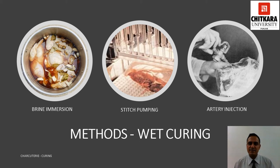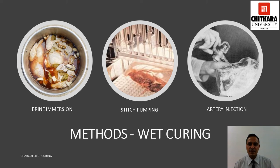This slide explains the various ways by which wet curing can be performed. It can be categorized into three ways: first, brine immersion; second, stitch pumping; and third, artery injection. In brine soaking, the dry curing mix is dissolved in water — this liquid is called brine or pickle — and the procedure is called immersion curing. Immersion curing is slower, and the pickle solution has to be changed every 7 days to prevent spoilage. A salimeter should be used to measure the strength of the curing brine. In stitch pumping, a long needle with multiple holes around the shaft is used; the needle is inserted into the meat and the curing solution is pumped into the product.